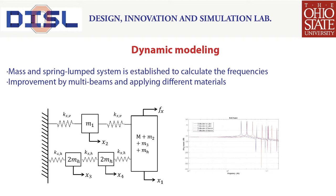Other than static performance, dynamic modeling is also important for realizing the system's characteristic behavior. A system with lumped masses and springs is established, as shown in the figure on the left. The stiffness between each intermediate mass is calculated from previous analysis, and the masses are based on material properties with assistance from CAD software. The natural frequencies are derived and provide a reliable reference for designing a control system in the future.